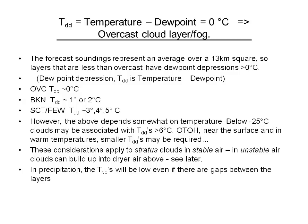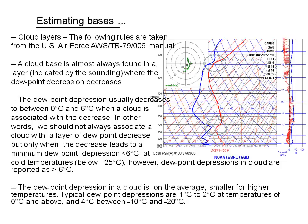If it's actually precipitating — raining or snowing — then as far as these skew-Ts are concerned, the temperature-dew point spread will be low even if there are gaps between the clouds. You could have clouds near the ground, a gap in which it's raining from clouds above, but there wouldn't be any fine distinction between the bases of the upper clouds and the precipitation below. It all looks saturated as far as the skew-T can tell.